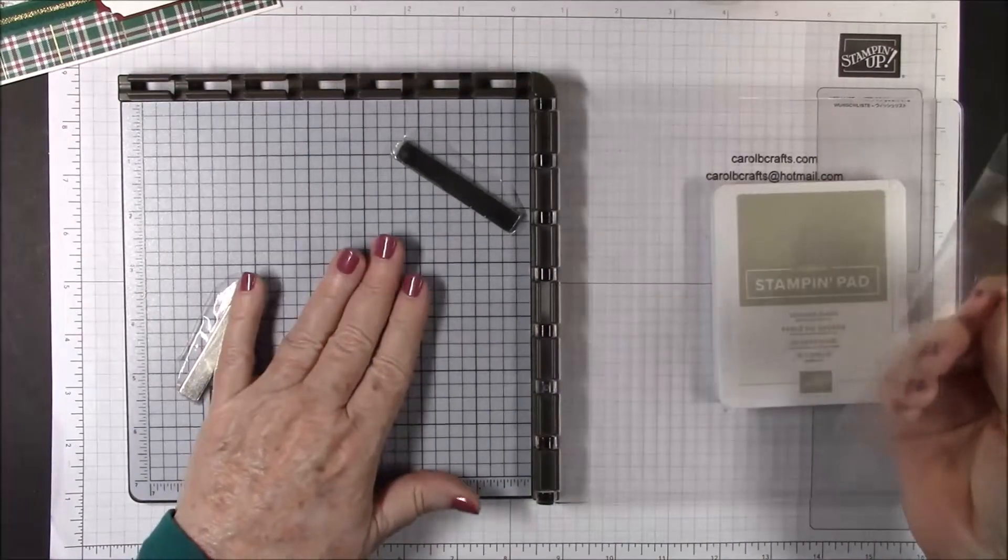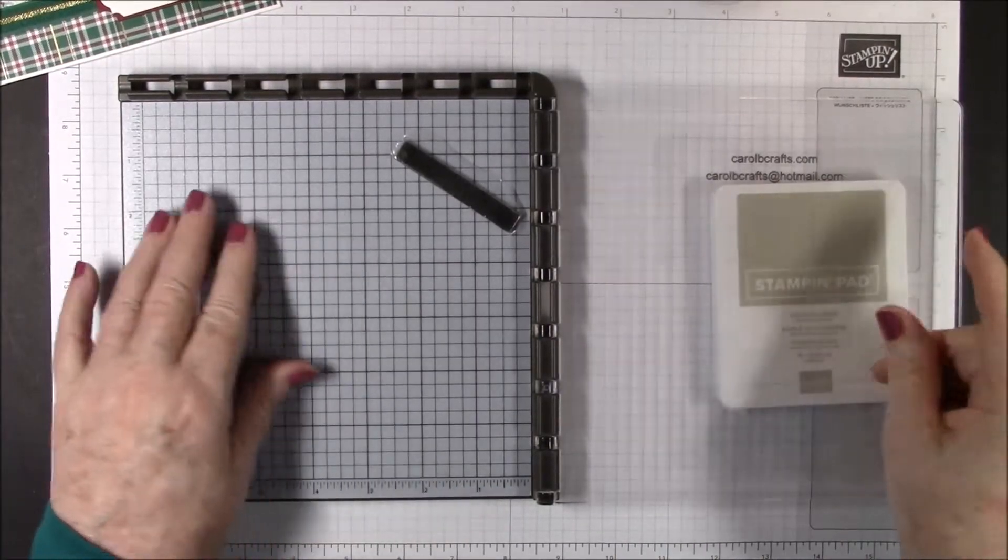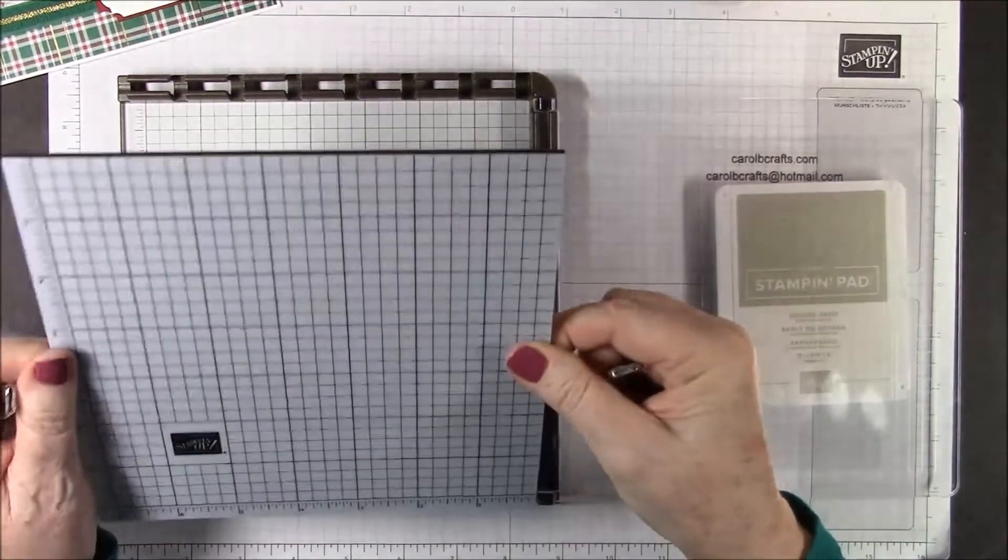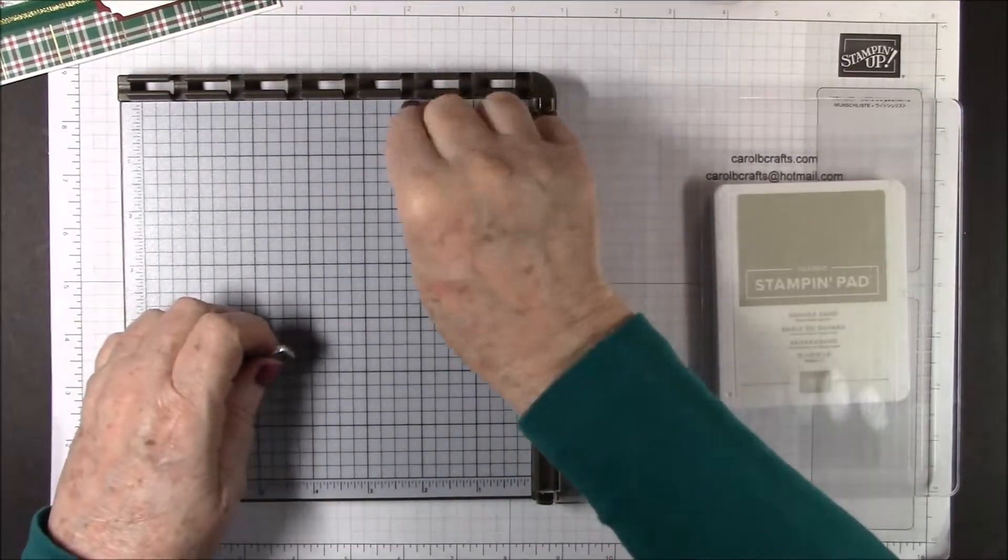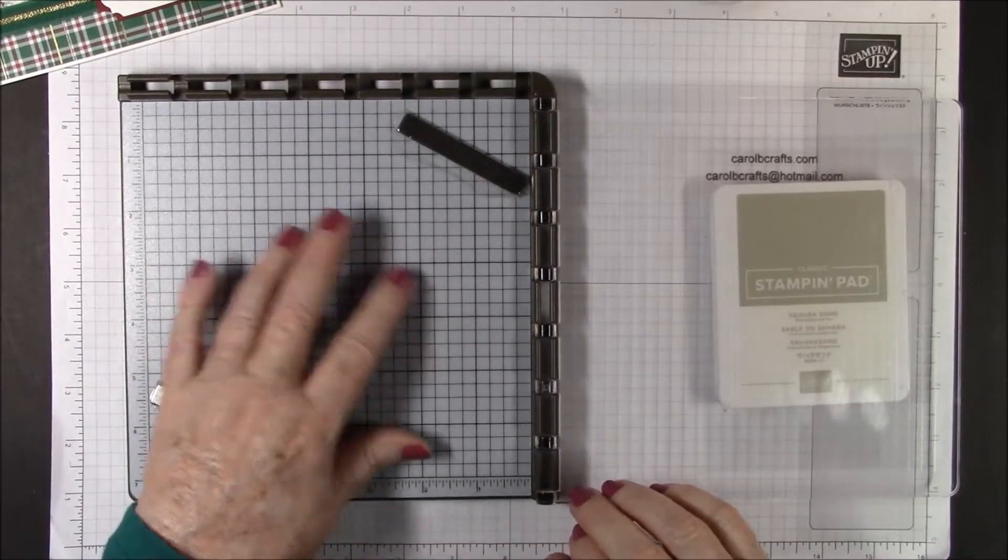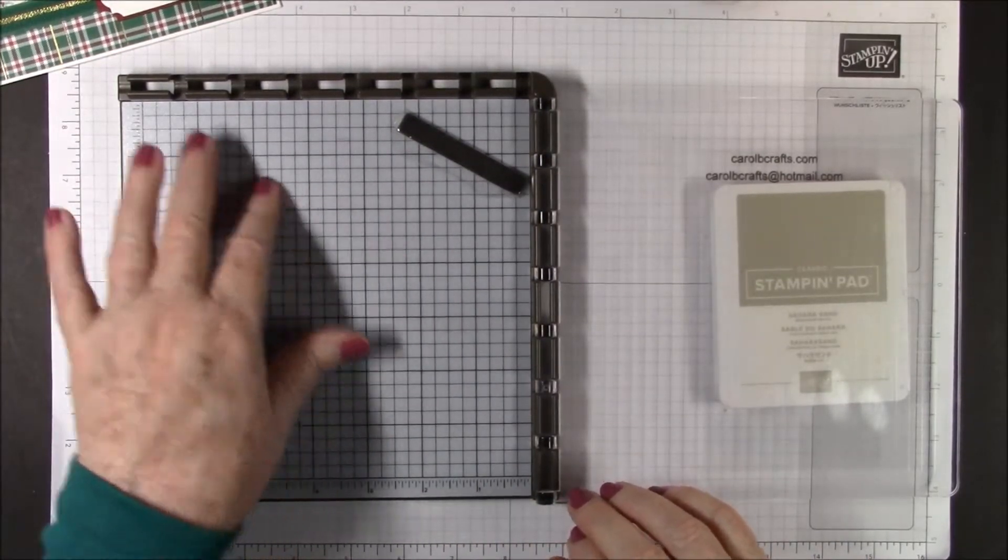I have my stamparatus set up for photopolymer stamps and I'm using this new deluxe foam mat or pad that is in the annual catalog and I'm loving it. It has a plastic-like coating to prevent staining.